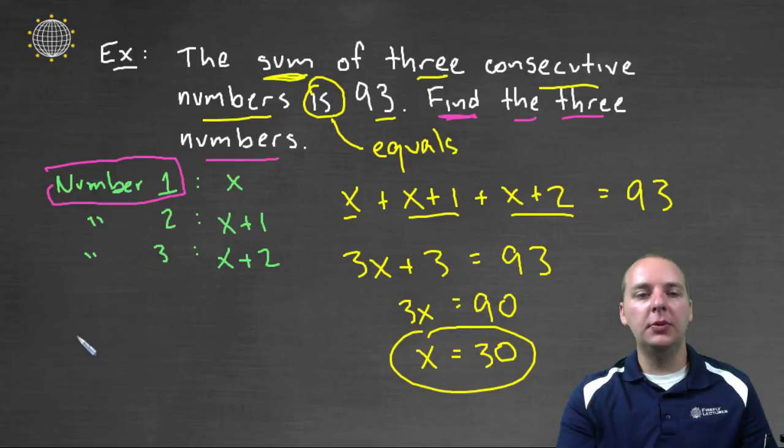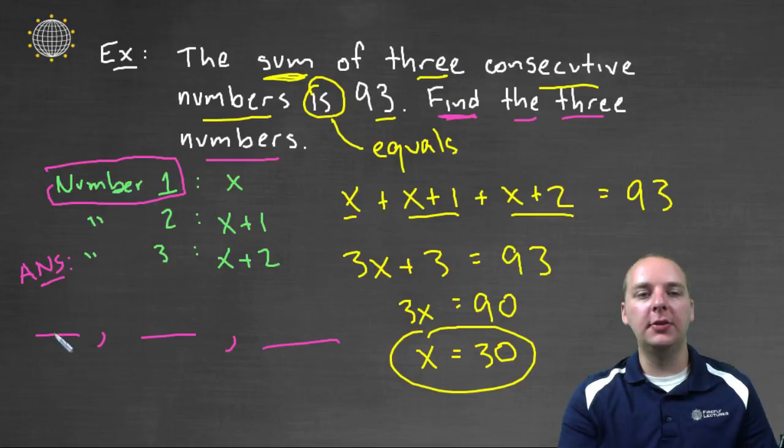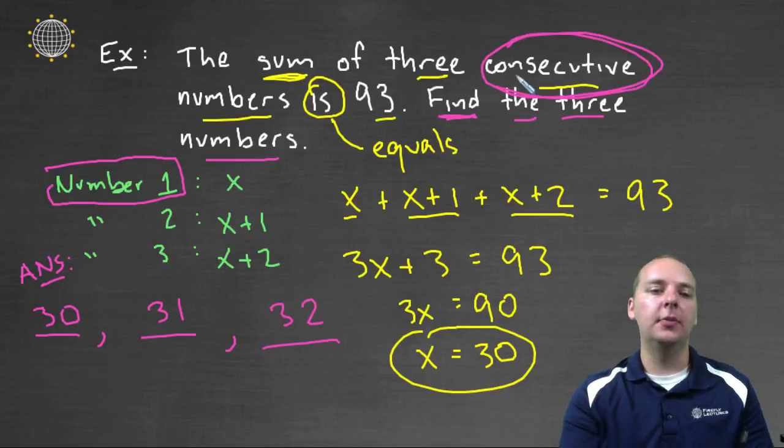So the three numbers would actually be a list like this, of three numbers. So your final answer would be blank, blank, and blank. But thirty is just the first number. So knowing what you know about numbers one, two, and three, what do you think the second number would be? It would be thirty-one. And the third number would be thirty-two. Because these have to be consecutive, right?